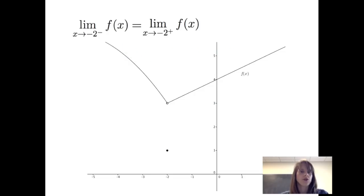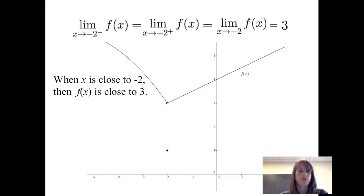So therefore the two one-sided limits — the limit of f of x as x approaches negative 2 from the left and the limit of f of x as x approaches negative 2 from the right — are equal. Therefore the limit of f of x as x approaches negative 2 exists and is equal to 3 as well. We can refer back to the definition of limit: when x is close to negative 2, then f of x is close to positive 3.